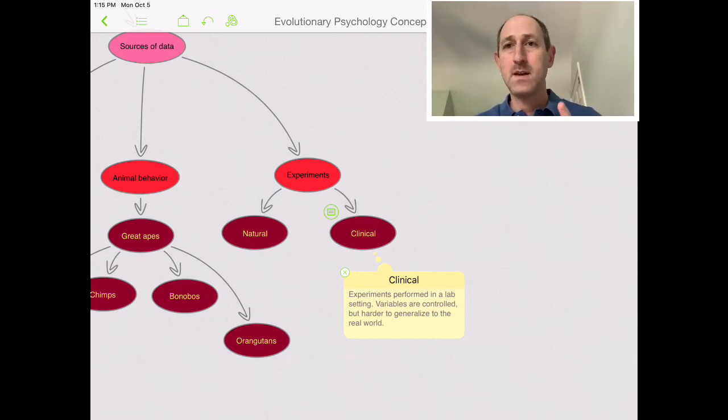Now, the good thing about it is I control everything as much as I can. The bad thing about it is that it's hard to generalize because what if the people I bring in are only white or only educated or only whatever? They're not as representative as I might want them to be. That's one problem. The second problem is that it's not the real world. It's a lab situation. And people may not behave the same way in a lab as they might in the real world. So we might not be able to generalize to other people or other situations or contexts.